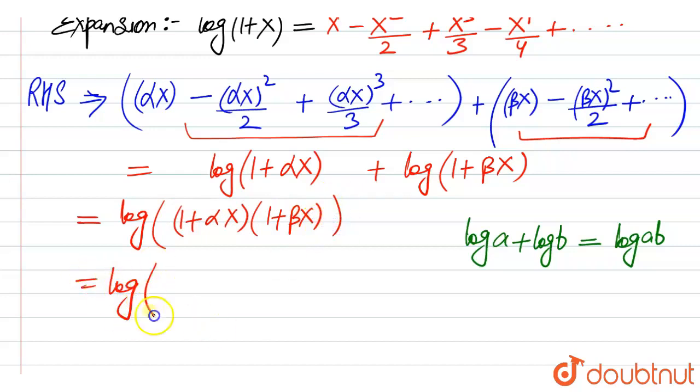So this is log of 1 plus alpha x into 1 plus beta x. You can simplify this further, this is 1 plus beta x plus alpha x into alpha into beta x squared.